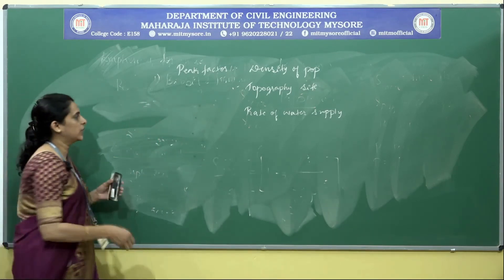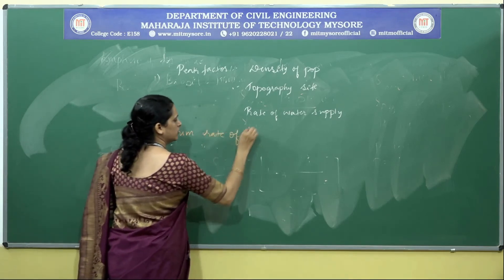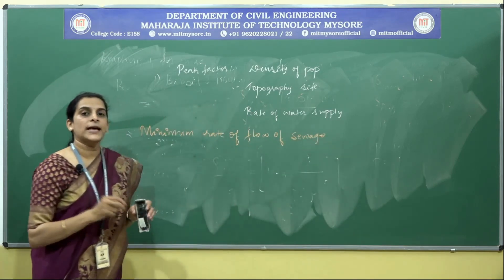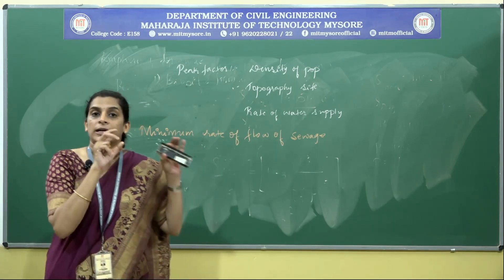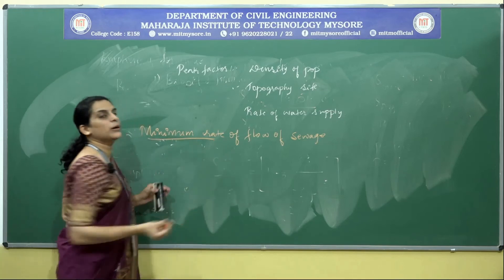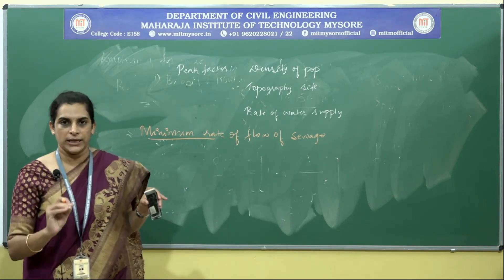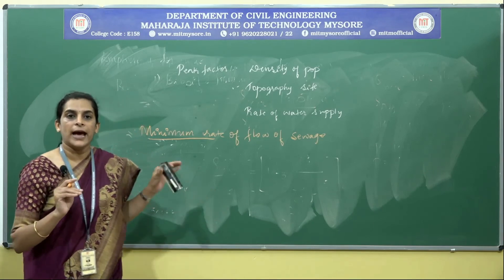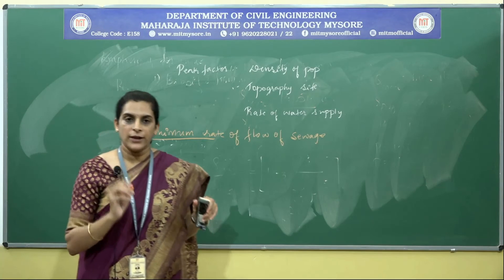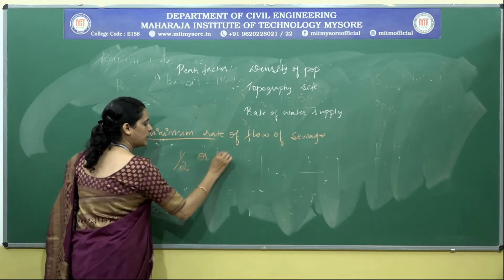Next is the minimum rate of flow of domestic or sanitary sewage. The design of sewers depends not only on maximum flow but also on the minimum rate of flow. If the sewer is laid at a longitudinal gradient, it must meet the minimum velocity; otherwise it may lead to deposition. On average, the minimum flow has to be designed for 1/2 or 1/3 of the average flow.